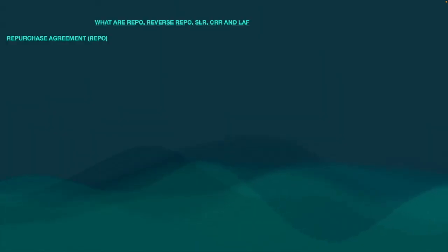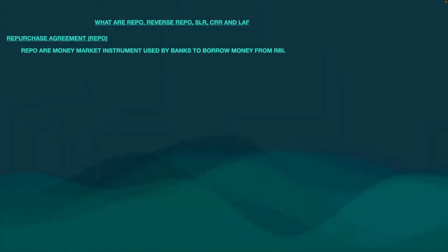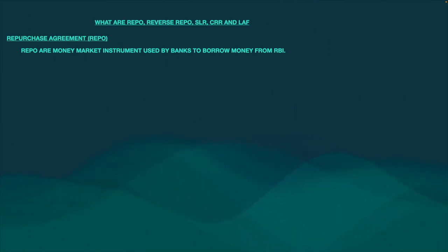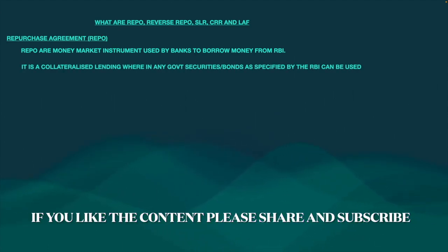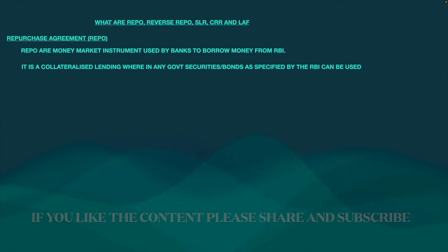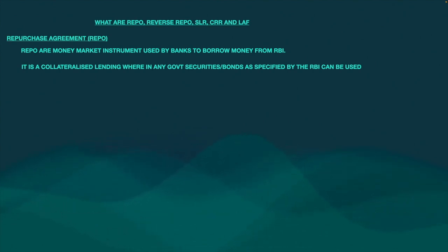Let us understand what is repurchase agreement. Repo is basically a money market instrument used by banks to borrow money from the RBI. So repo means banks borrow money from the RBI. It is a collateralized lending, meaning the bank has to give something as collateral. Any government securities or bonds specified by the RBI can be used as collateral.